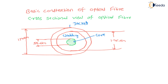So this is the overall view of optical fiber. Just remember these three parts: the inner one is the core, the outer one is the cladding, and the final one is the jacket. The jacket protects the core and cladding from outside disturbances. The cladding is especially used to reduce scattering loss at the core surface and also enhances the mechanical strength of the optical fiber.